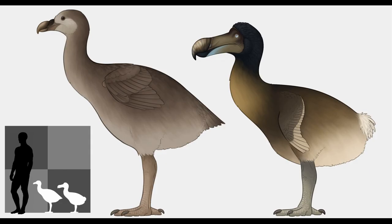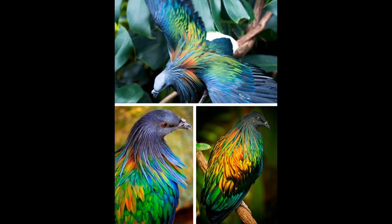Intriguingly, as far back as the 1800s, some researchers had proposed that the dodo was a close relative of the Rodriguez solitaire, and that both nested within the pigeons. Indeed, in 2002, a team of researchers took DNA from some dodo bones, bones of the Rodriguez solitaire, and bones from a variety of extant birds, and found that the dodo and solitaire are indeed large, flightless pigeons. The next closest relative of the two is the Nicobar pigeon, Caloenas nicobarica, a beautiful bird from Southeast Asia.